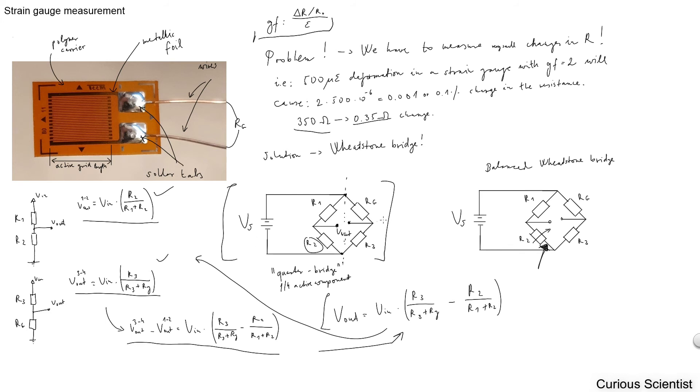There are several types of Wheatstone bridges, but the most simple Wheatstone bridge is the quarter bridge. We can also imagine these things as two voltage dividers. So we can easily derive the formula for the output voltage.